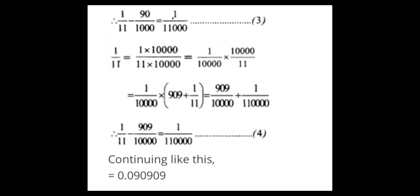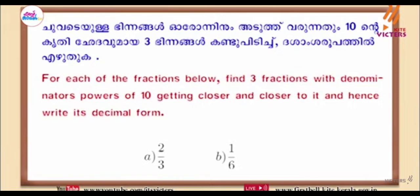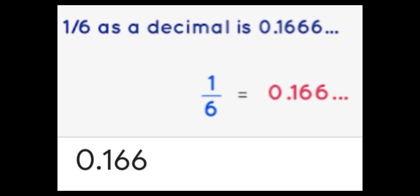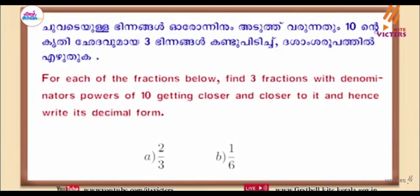1 by 10,000 — 999 plus 1 by 11 equal to 1 lakh by 11. 1 by 11 gives us 0.09, 0.09. And 1 by 6 gives 0.1666, 0.1666.